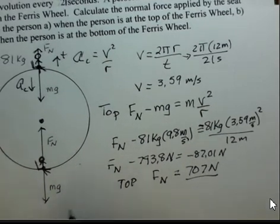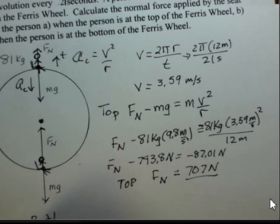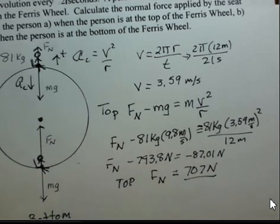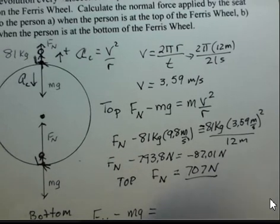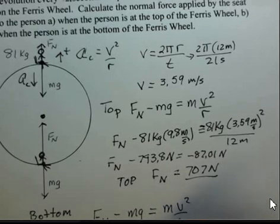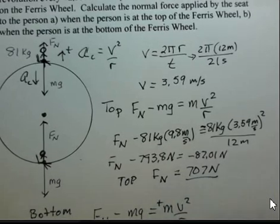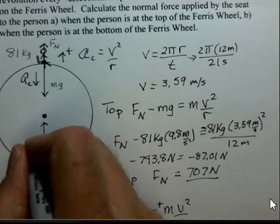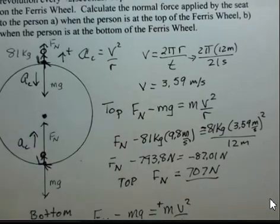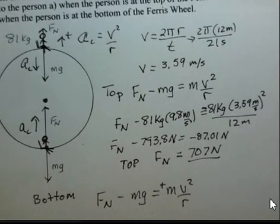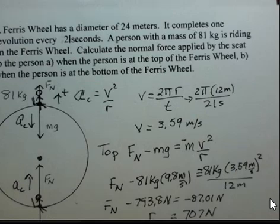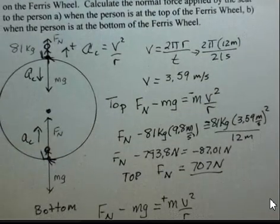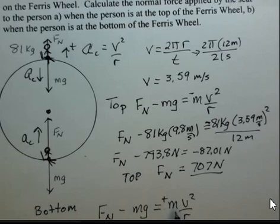Well, very similar calculation at the bottom. What do you think changes in what we set up here at the bottom? I'd have Fn minus Mg equals M V² over R. And this time, the acceleration is positive. The acceleration is upward in a positive direction. So I probably should have put minus even on the writing out in symbols, as the acceleration is in the negative direction. At this time, the acceleration is positive.